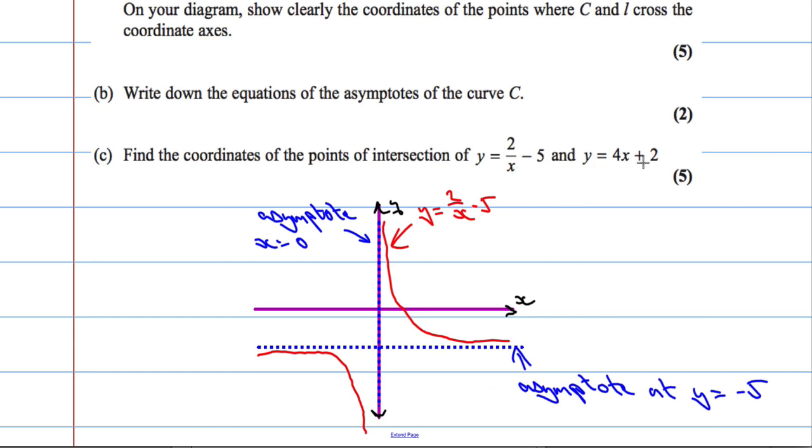So we're going to have some y-intercept here at 2. And it's going to get a gradient of 4, so pretty steep, something like this. It's going to cut when y equals 2. And this is y equals 4x plus 2.